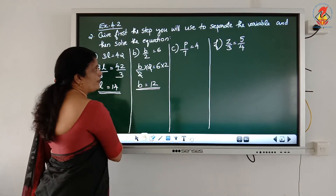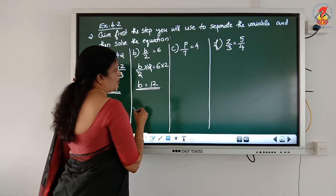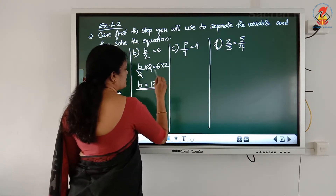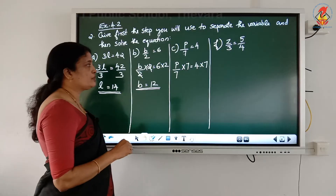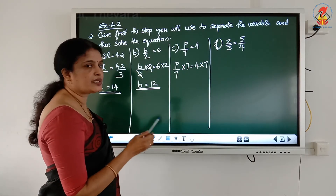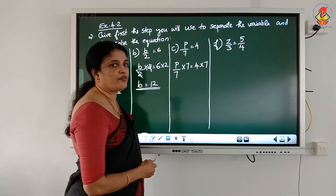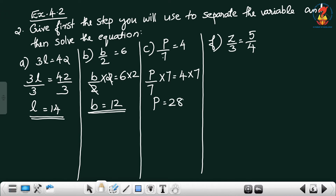That means we separate the variable from the LHS. Next: P divided by 7 = 4. To eliminate divided by 7, multiply both sides by 7 — so P divided by 7, multiplied by 7, equals 4 multiplied by 7. At the same time, the RHS is also multiplied by 7. When you multiply both sides by the same number, the equation remains the same. Then 7 and 7 cancel, giving P = 28.